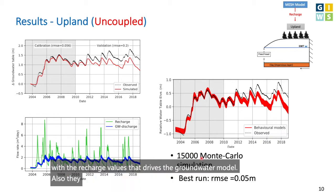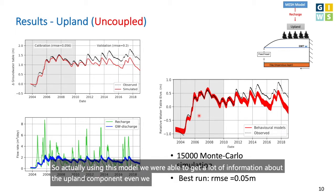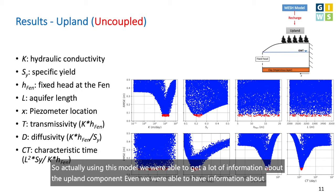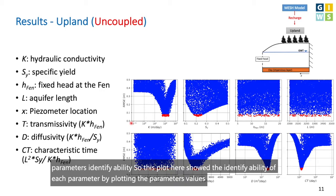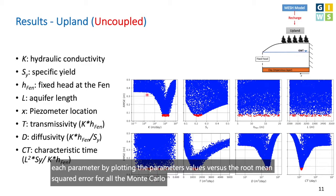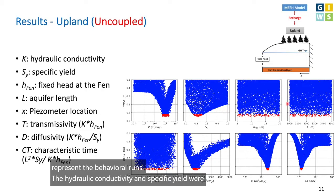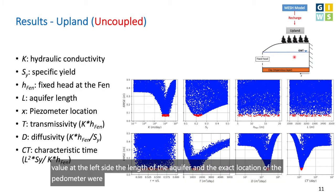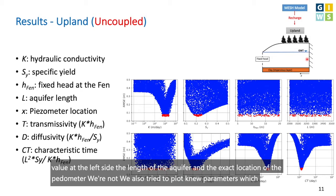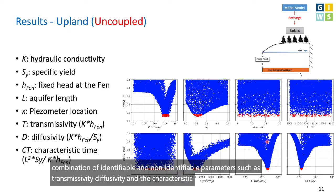The behavioral runs were also used to get uncertainty bounds in the groundwater table. Using this model, we obtained a lot of information about the upland component, including parameter identifiability. This plot shows the identifiability of each parameter by plotting parameter values versus RMSE for all Monte Carlo simulations, with red dots representing the behavioral runs. Hydraulic conductivity and specific yield were identifiable, but the head value at the left boundary, aquifer length, and piezometer location were not. We also derived composite parameters — transmissivity, diffusivity, and characteristic time — which were all strongly identifiable.